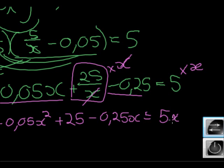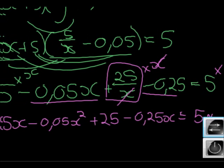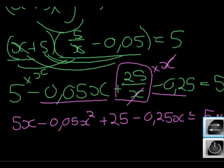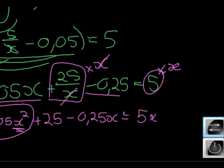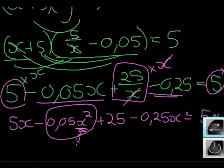What's the aim of solving an equation? Get x on his own. Problem is x is in the denominator. How do I get rid of a denominator? Multiply x everywhere. So we multiply with an x everywhere. This gets multiplied with an x to become 5x. This becomes negative 0.05x squared. This gets multiplied with an x to get 25. This negative 0.25 becomes negative 0.25x is equal to 5.